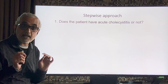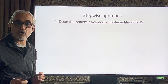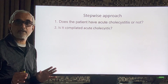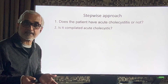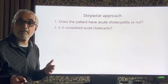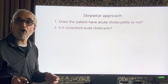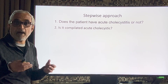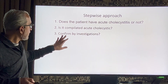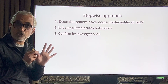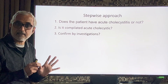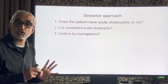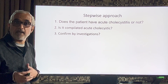The first step is: does the patient have acute cholecystitis or not? Then, is the acute cholecystitis complicated or not — meaning has a complication set in, such as empyema, abscess, or an inflammatory mass with necrosis and micro-abscesses? Third, rule out other diseases that present with pain in the right upper abdomen.